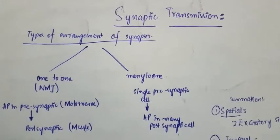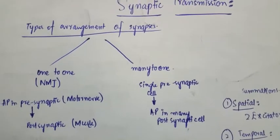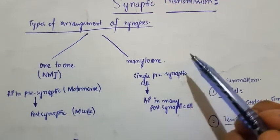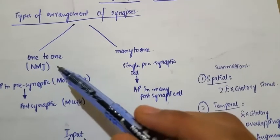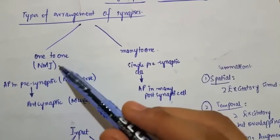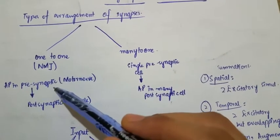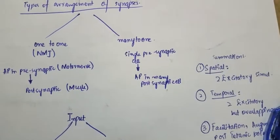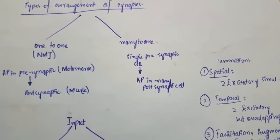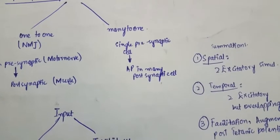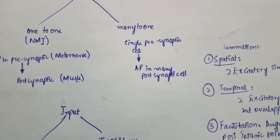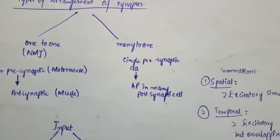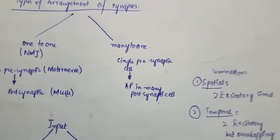There are two types of synaptic arrangements: one-to-one synapses and many-to-one synapses. The neuromuscular junction is an example of one-to-one synapses, where an action potential in the motor neuron leads to an action potential in the muscle. In many-to-one synapses, a single presynaptic cell produces action potentials in many postsynaptic cells — for example, a single spinal nerve activates many muscle fibers.